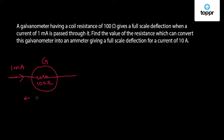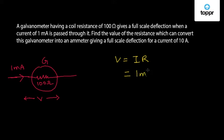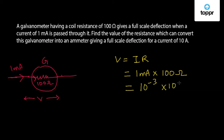Let us assume that the voltage drop across the galvanometer is V. We can calculate this voltage drop V by the relation V equal to IR, where I is the current through the galvanometer and R is the resistance of the coil. So in full scale deflection, the current is 1 mA and the resistance is 100 ohms. This gives 10 to the power minus 3 into 100, which is equal to 0.1 volts.